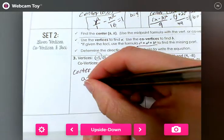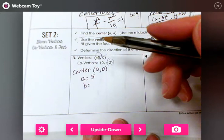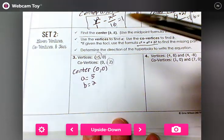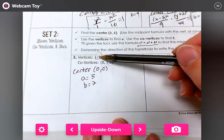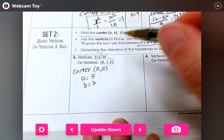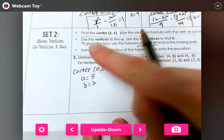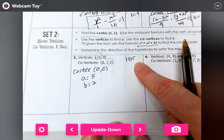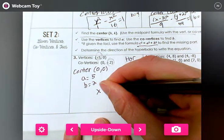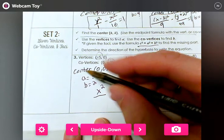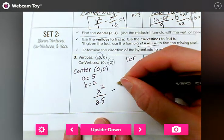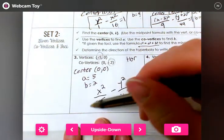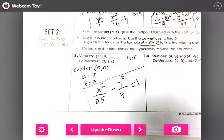The co-vertices, they are 2 away. So b is 2. Which one, the vertices, changed the x value. So I know that it's horizontal. If the vertices was 0, 2 or 0, some other number up here, then it would be vertical. Then I'm going to say x² over 5 times 5 is 25, minus y² over 2 times 2 is 4 equals 1.